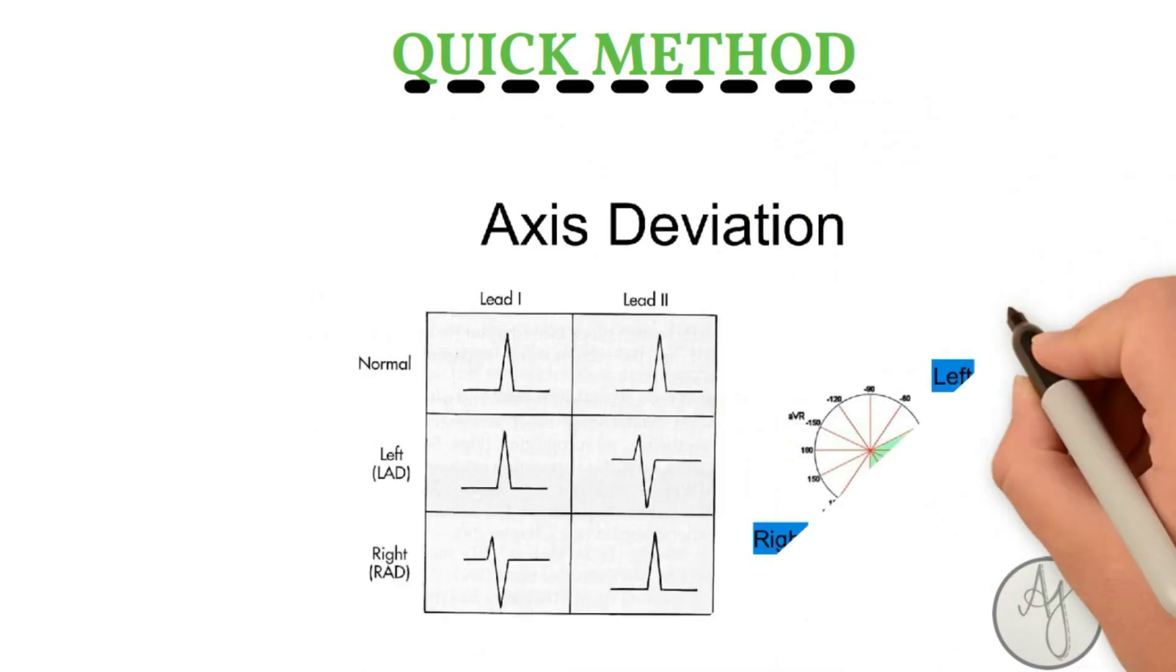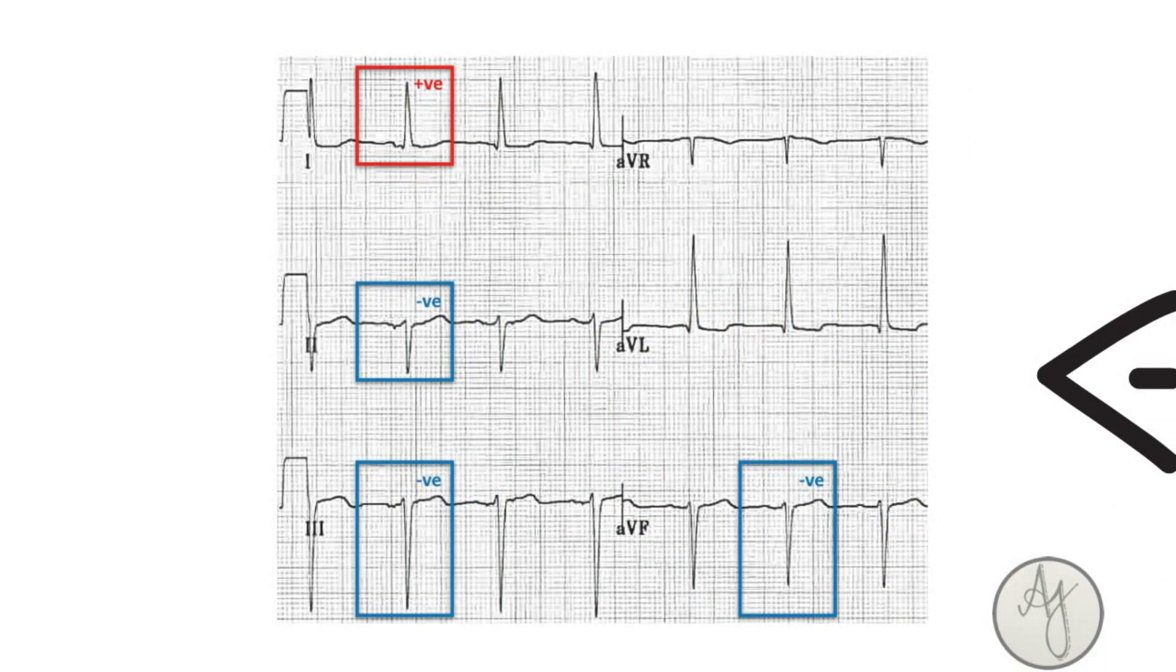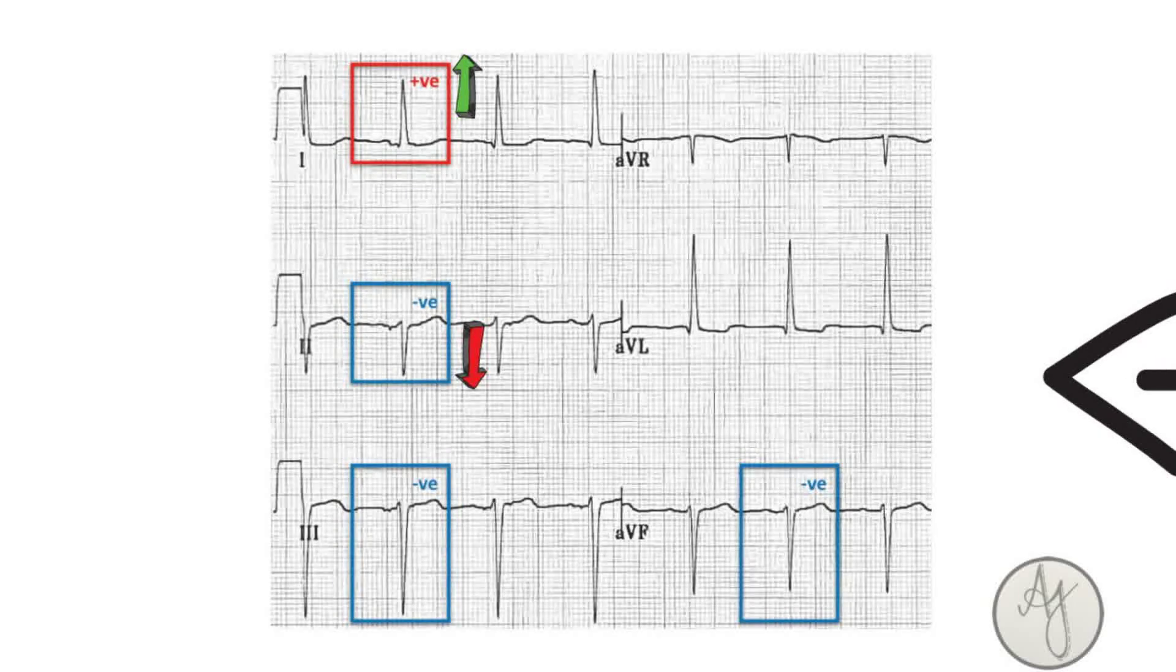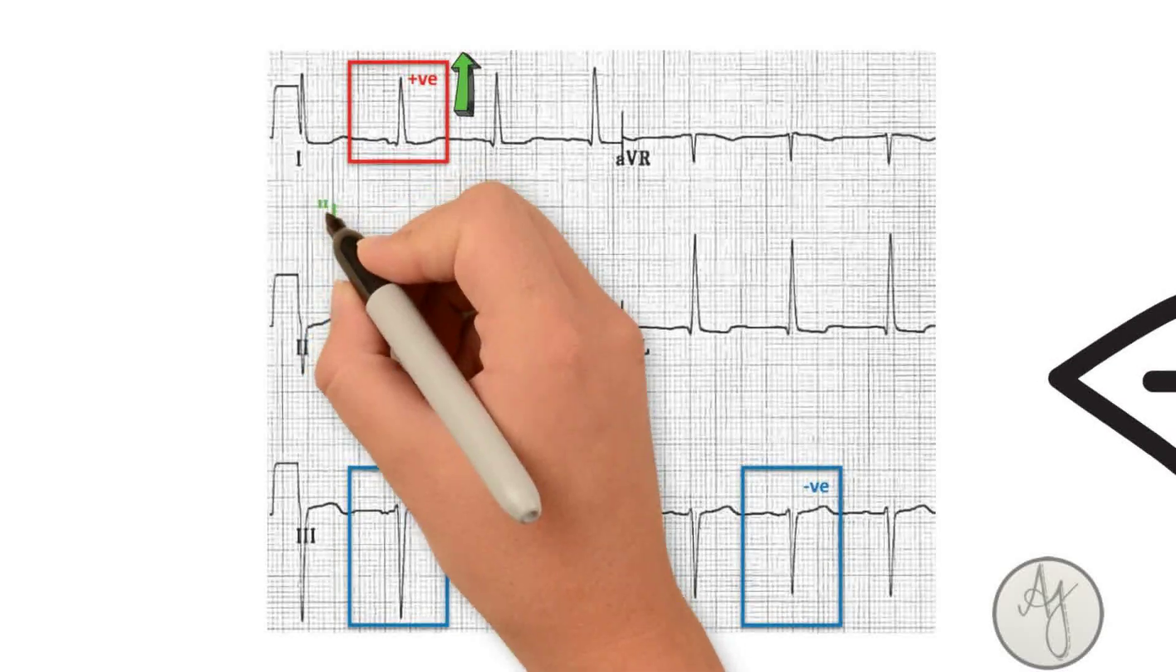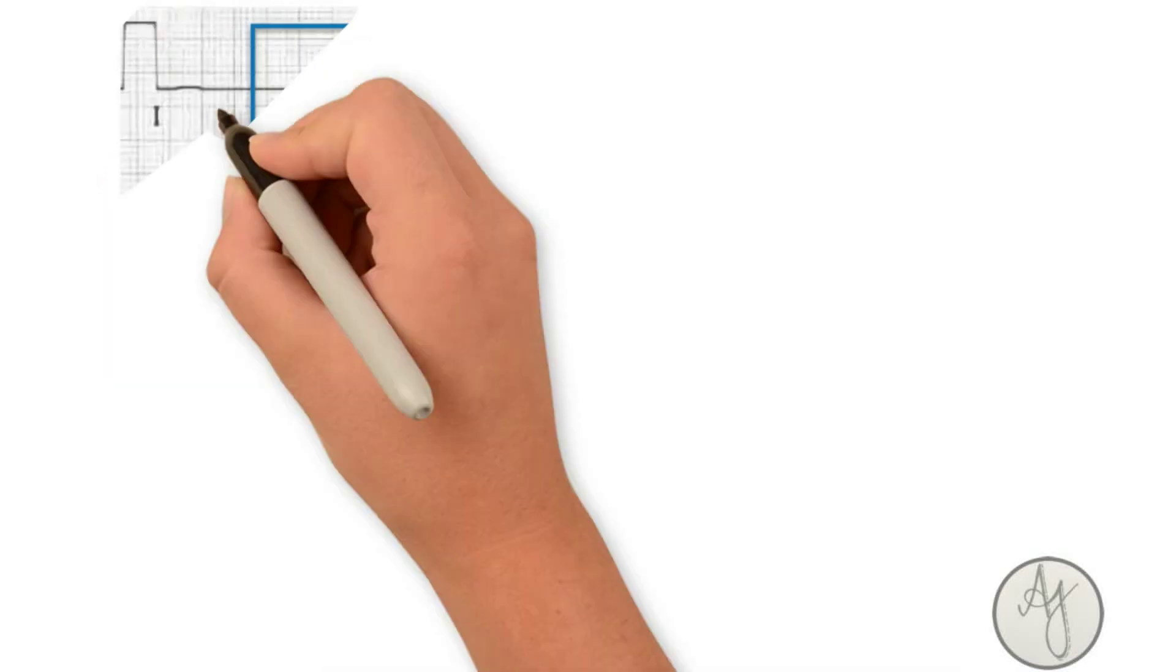If one and two are both positive, it's a normal axis. If one is positive and two is negative, the QRS complexes in these two leads appear to be leaving each other. So here it's a left axis deviation. Leaving for left, left axis deviation.